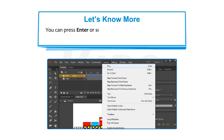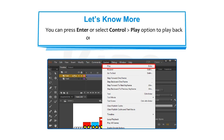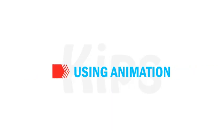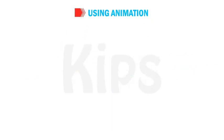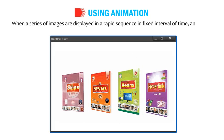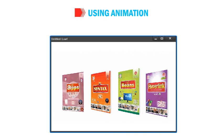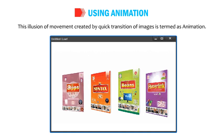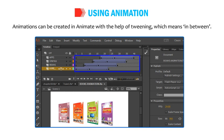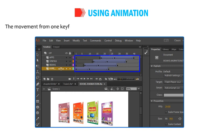You can press Enter or select Ctrl then Play to preview the animation. When a series of images are displayed in rapid sequence at fixed intervals of time, an illusion of movement is created. This illusion of movement created by a quick transition of images is termed as animation. Animations can be created in Animate with the help of tweening, which means in-between. The movement from one keyframe to the other becomes convenient with the use of tweening.